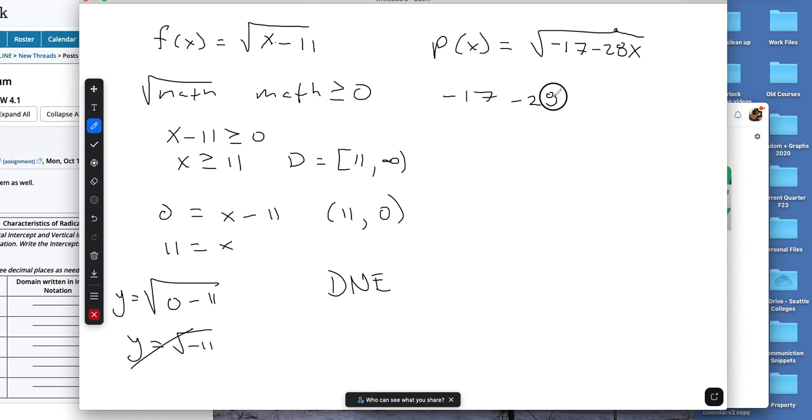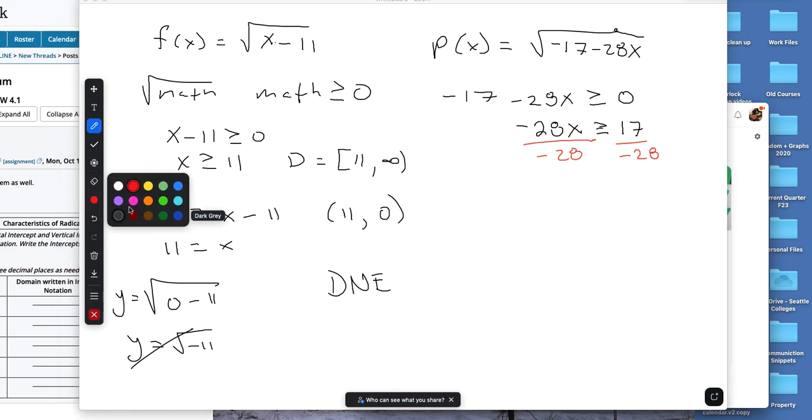So 17 minus 28x greater than or equal to 0. For domain, we add the 17 over and I got negative 28x is greater than or equal to positive 17. And then here's where people mess it up. When you multiply or divide an inequality by a negative number, you have to remember to flip the direction of the inequality. So right there, I'm dividing both sides by negative 28.